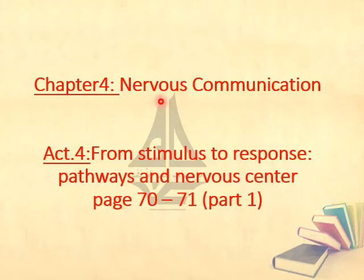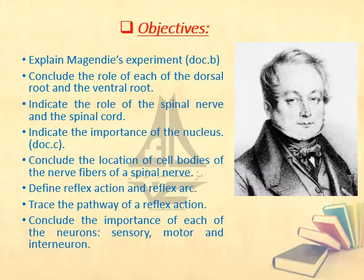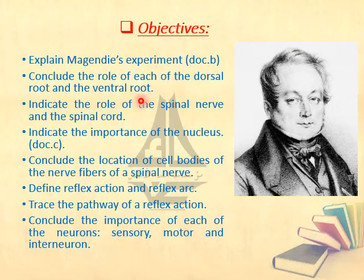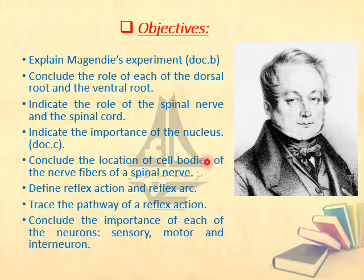Today we are going to explain Chapter 4 on the nervous system: activity from stimulus to response pathways and nervous centers, pages 70-71. The objectives include Magendie's experiment, which is very important. Through it, you will be able to conclude the role of each of the dorsal root and the ventral root, the role of the spinal nerve and spinal cord, and the locations of neuron cell bodies. We will also recall reflex action and the reflex arc pathway.